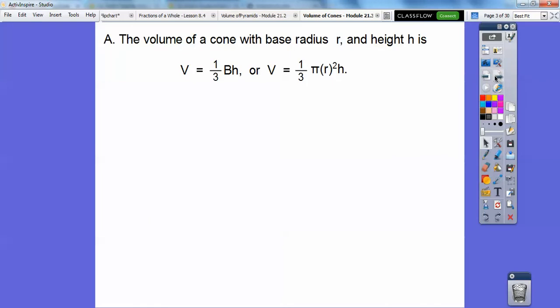Alright, so the volume of a cone is just like the volume of a pyramid, which is base times height and then a third of that, so the volume of a cone is one-third base times height. And since the cone is a circular base, then it's one-third pi r squared times the height, V = 1/3 πr²h.